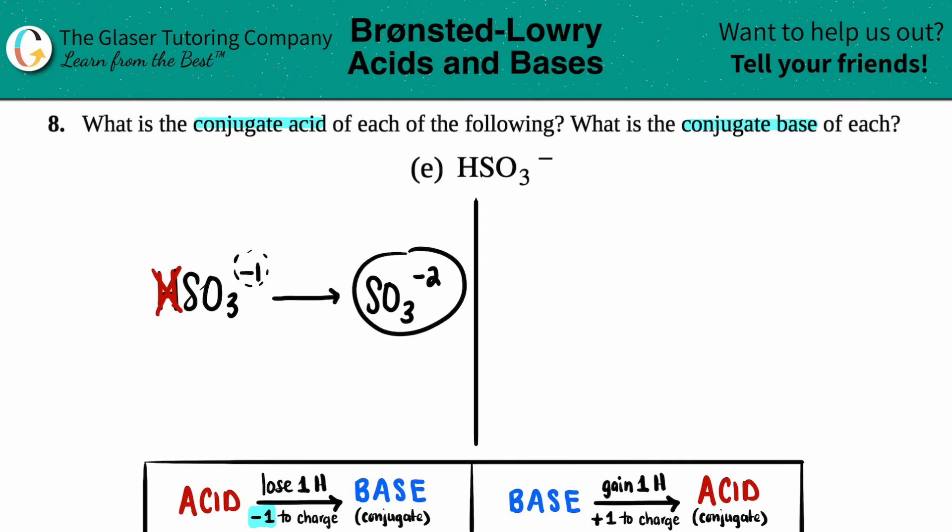Negative one minus one is a negative two. And that's the charge of sulfite. You might recognize this polyatomic ion. And sometimes it's just best to memorize polyatomics because the charges are always going to be the same.